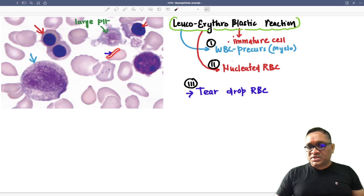And third important thing you can notice there is a teardrop RBC. So these are the three things which we are going to see on peripheral smear of myelophthisic anemia. So enjoy learning and best wishes for your exams.